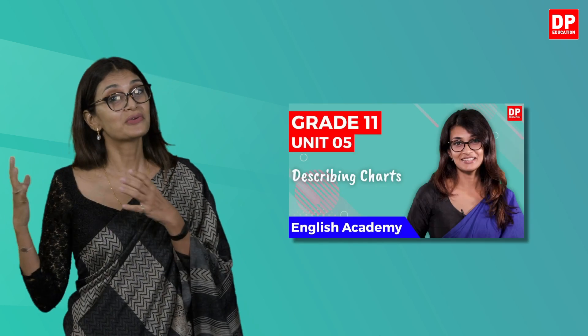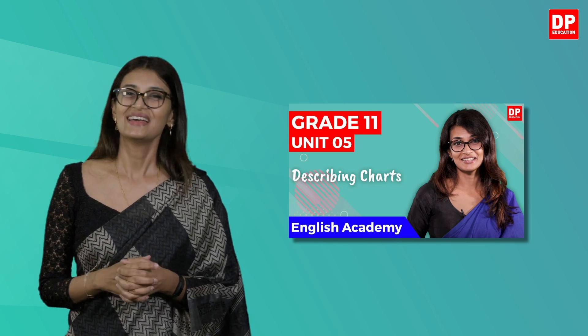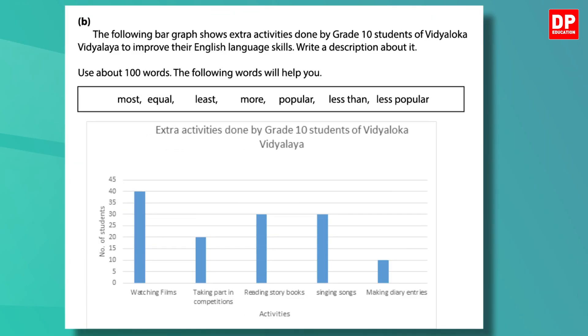You would have noticed that I have used all the guidelines given. If you don't like to write the letter, you have the option of choosing B. In this question, you are presented with a bar graph. You can look at some of our previous lessons to get an idea on how to tackle questions based on graphs, charts and tables. The bar graph shows extra activities done by grade 10 students of Vidyaloka Vidyalaya to improve their English language skills. Write a description about it using about 100 words, and use these words: most, equal, least, more, popular, less than, less popular.